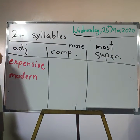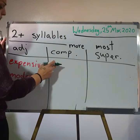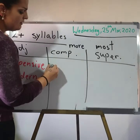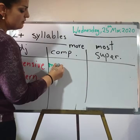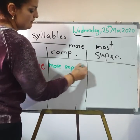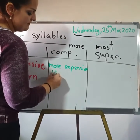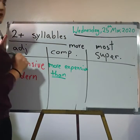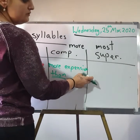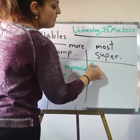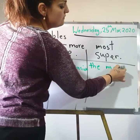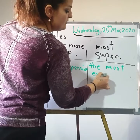In the comparative form: 'more expensive than' — don't forget to use 'than'. In the superlative form: 'the most expensive' — don't forget to use 'the' before 'most'.